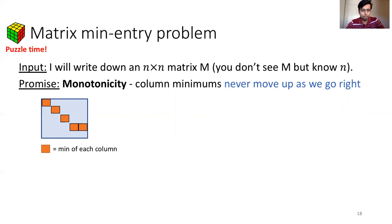An example is this matrix. The minimum entry of each column is in an orange box. As you can see, the orange boxes form a staircase. That is, the boxes never go up if you go from left to right.